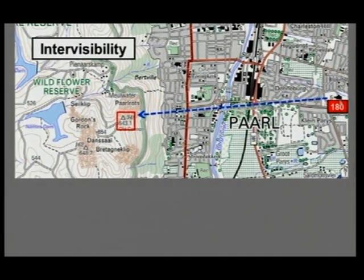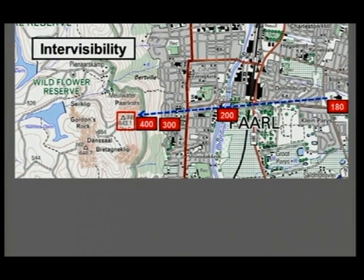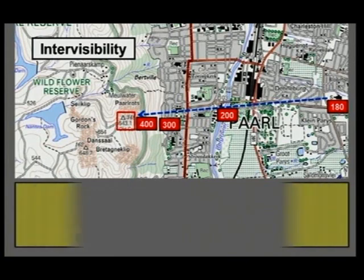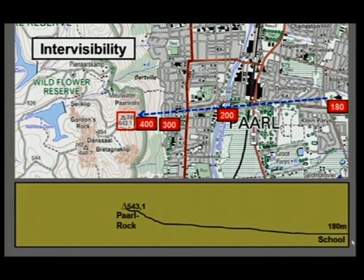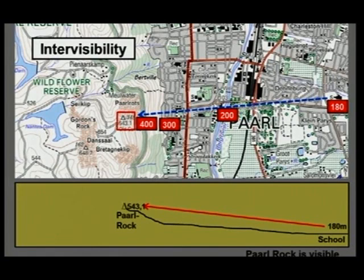Here I've got 180, and here I've got 543. I must look for heights in between and check — those are the heights: 180, 200, 300, 400, and this one is 543. Immediately I see there's nothing higher in my line of vision. If I draw a cross-section from the school to PAL Rock, it would look like this: here's the school, here's PAL Rock, and the learners from the school, if they look in the direction of PAL Rock, will definitely be able to see it. So PAL Rock is visible from the school.